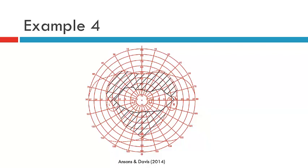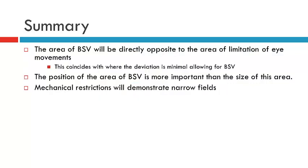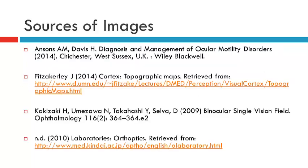The last example is the one we saw earlier when discussing recording of the area of BSV. Here we have a narrowing of the field — diplopia above and below the area of BSV — and this is a mechanical restriction. In summary, the area of BSV will generally be directly opposite to the area of limitation of the eye movements. It can give you some information about the likely affected muscle, but generally it will provide support for your diagnosis and give you an idea of the functional impact that diplopia and limited eye movements are having on the patient. The position of the area of BSV is more important than the size — if the position is in primary position, this is far better for the patient even if it's smaller than a larger visual field out in the periphery. Always remember that a mechanical restriction will demonstrate narrow fields.